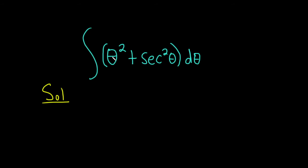To integrate theta squared, we can use the power rule. We look at the exponent, add 1, and then divide by the result. So 2 plus 1 is 3, and we divide by 3.